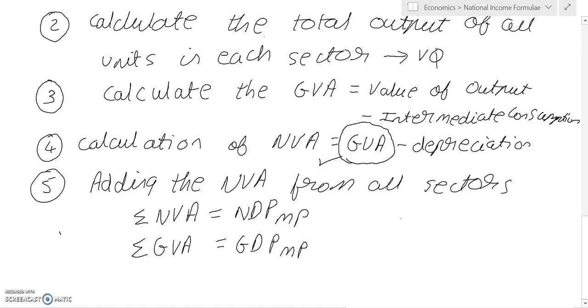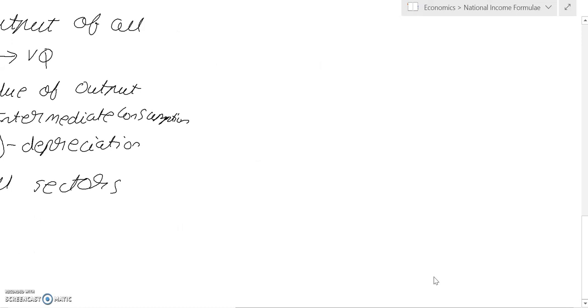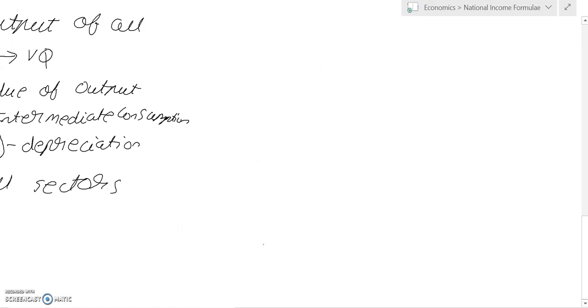Now, if we are starting from either GVA or NVA, we can move towards national income, which we know is net national product at factor cost. So let's say we begin from GDP at MP.